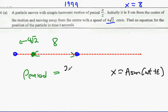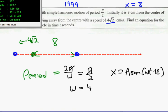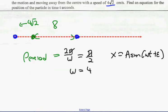Now, we're going to say period is 2π over ω. 2π over ω is π over 2. We're going to cancel the π's, and then ω is going to equal 4. So ω equals 4.